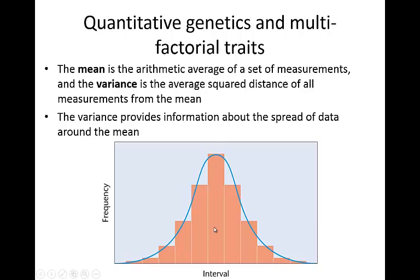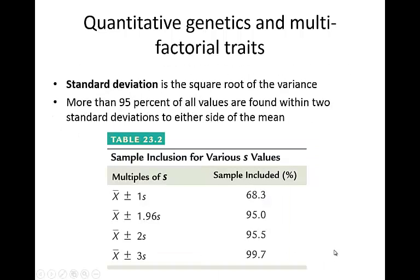The mean is going to be the arithmetic average of a set of measurements. The variance is going to be the average square distance of all measurements from the mean, providing information about the spread of data around the mean — whether the data is clustered very tightly or spread out pretty far. Standard deviation is the square root of the variance. More than 95% of all values are going to be found within two standard deviations to either side of the mean, assuming a normal distribution.